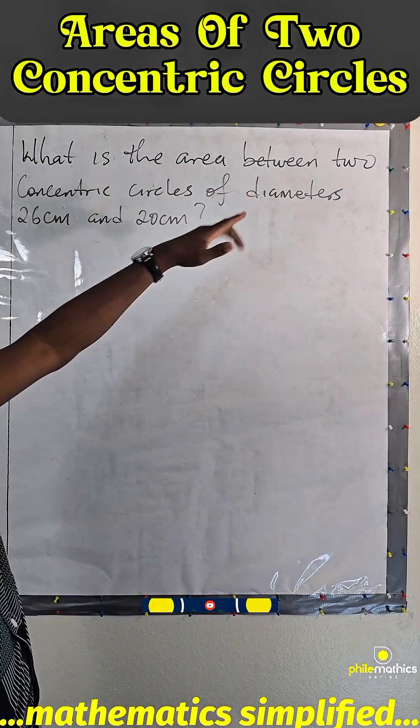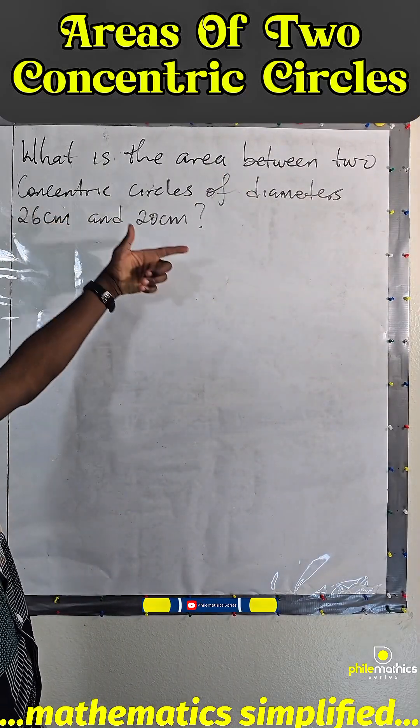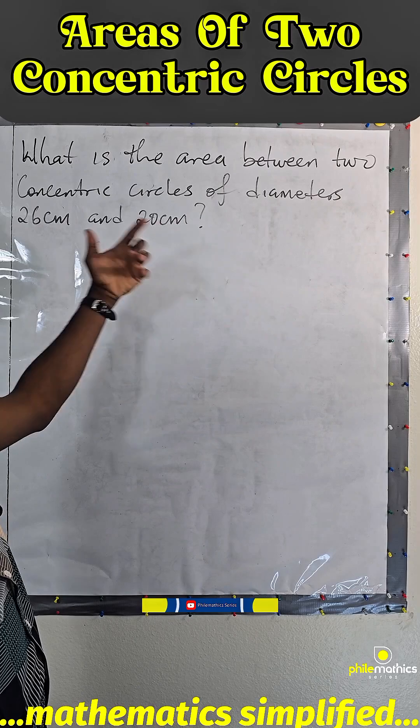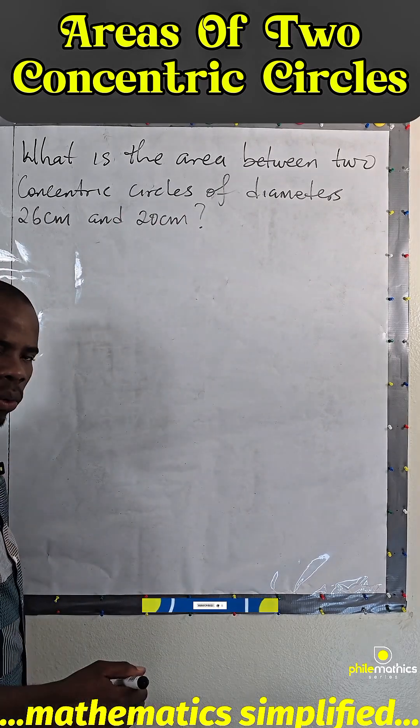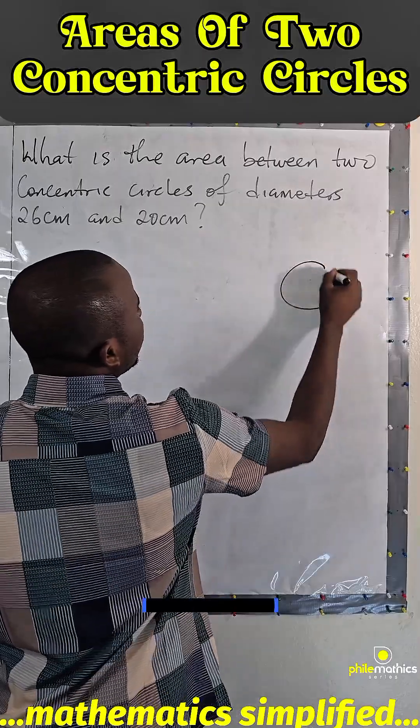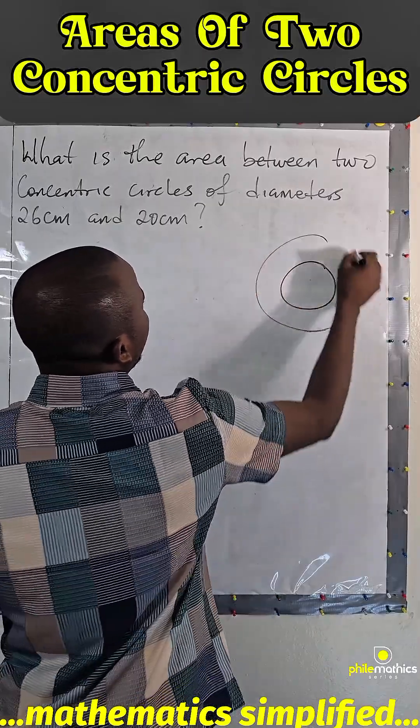We are asked to find the area between two concentric circles of diameters 26 cm and 20 cm. What does a concentric circle mean? It means you have a circle inside and a circle outside.